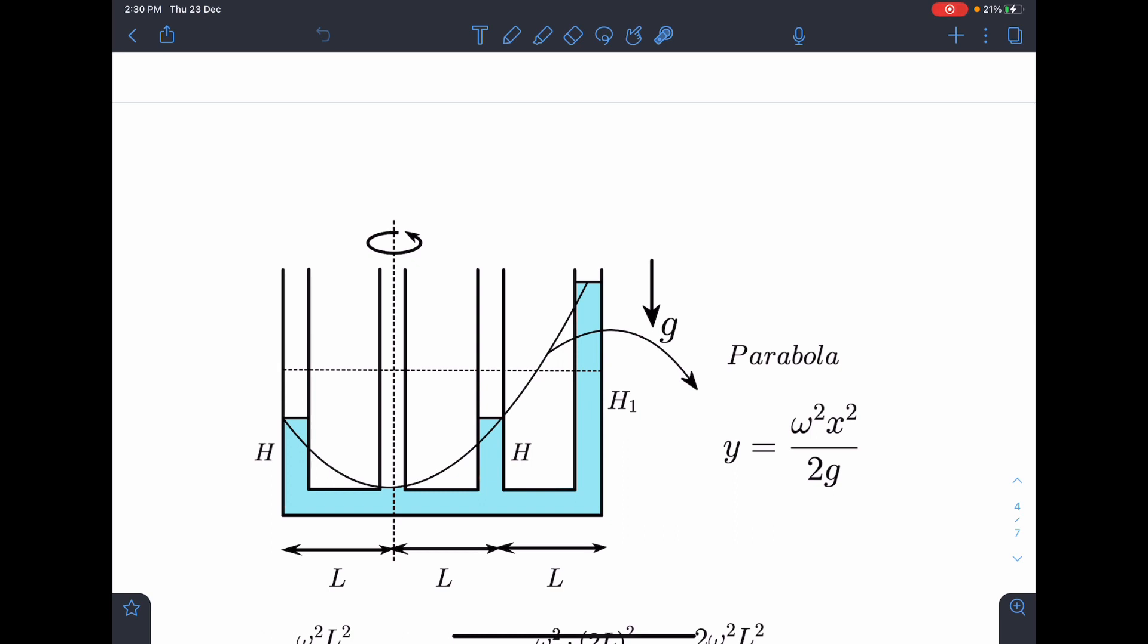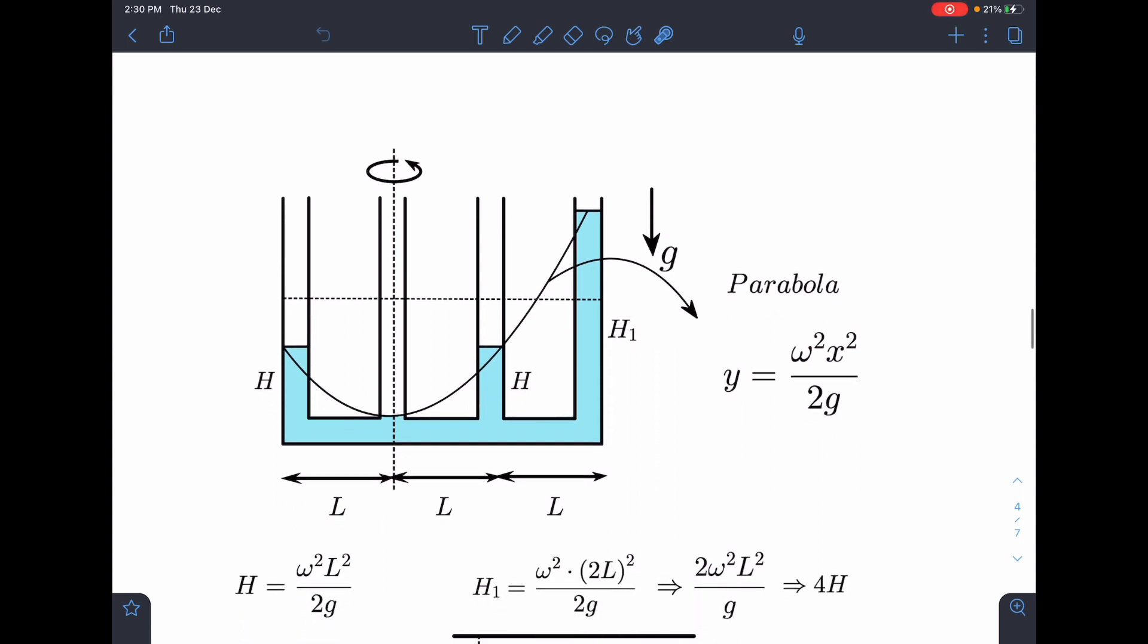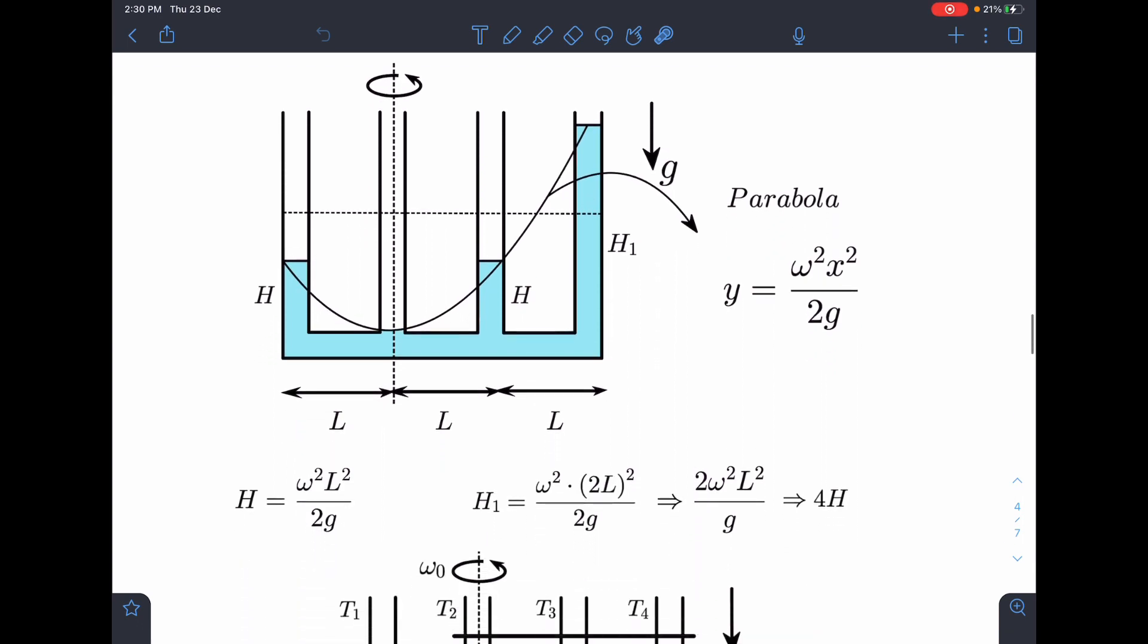And here this height will become something else in such a way that volume of liquid is conserved. So now here you can say h is equal to, we can substitute here y equals omega square x square by 2g. So for this point, we can substitute here h value and at a distance of L. So h equals omega square L square by 2g.